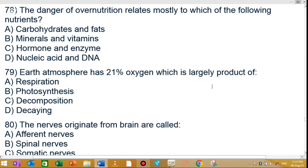MCQ number 78: The danger of overnutrition relates mostly to which of the following nutrients? Overnutrition, meaning excessive food intake, relates to carbohydrates and fats. Option A is the correct answer.